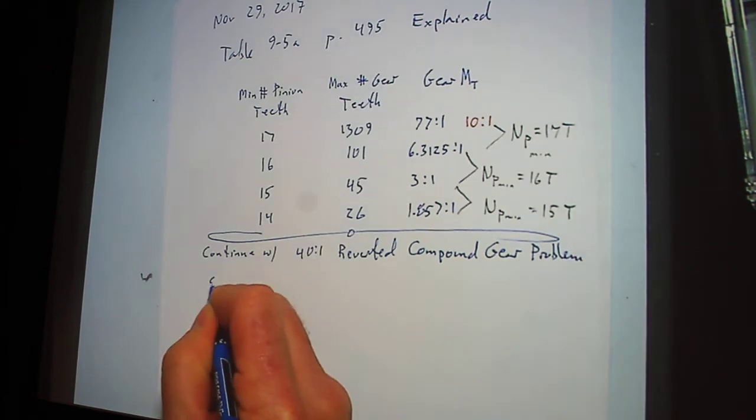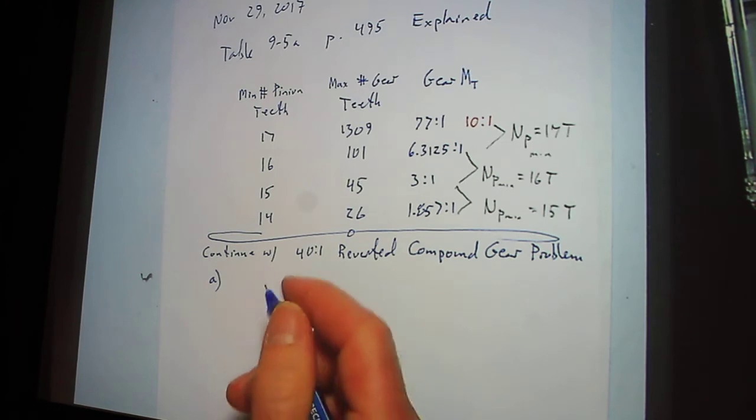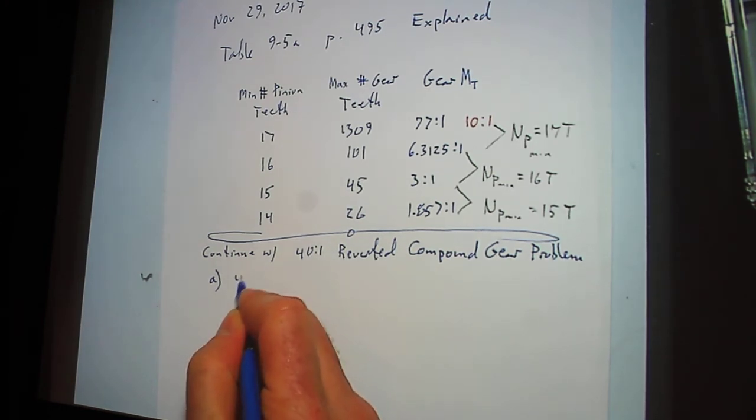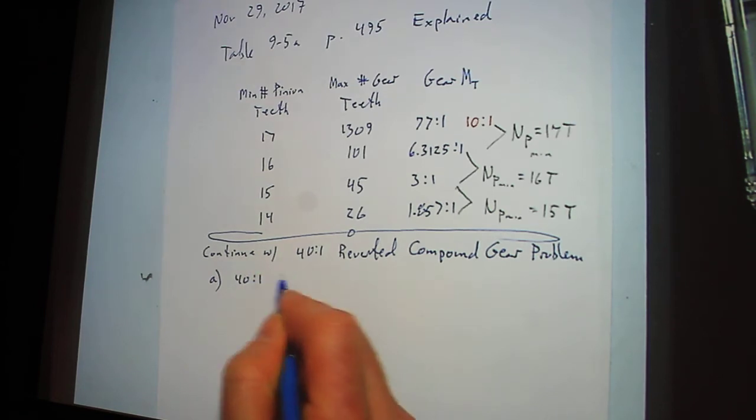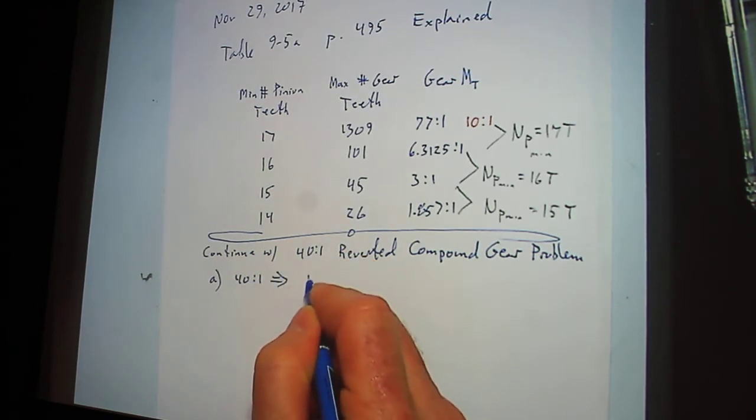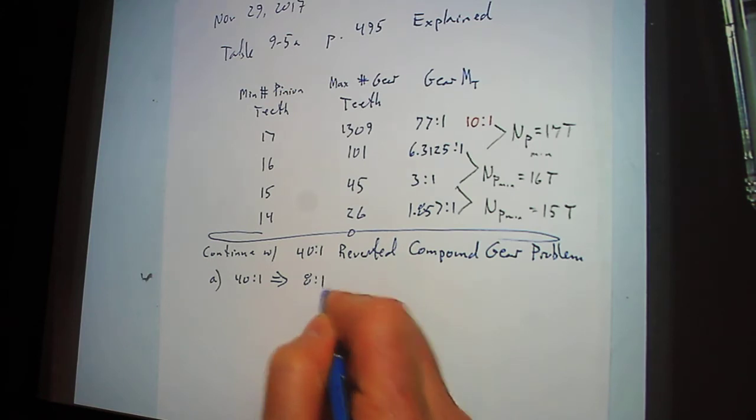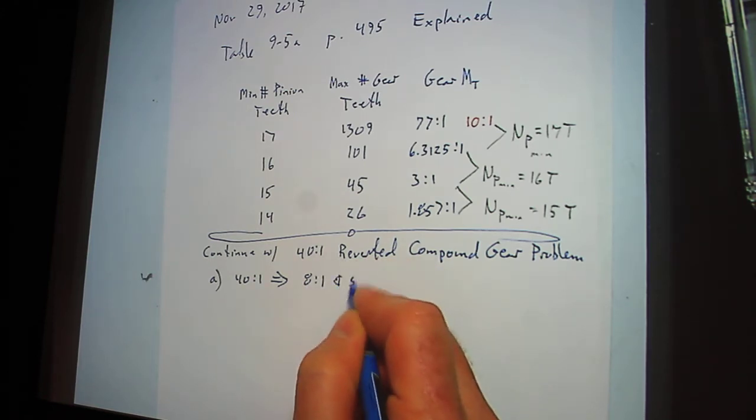Recall that we did part A where we had an 8 to 1. So we did 40 to 1, we broke it into two compound gears where we did an 8 to 1 and a 5 to 1.